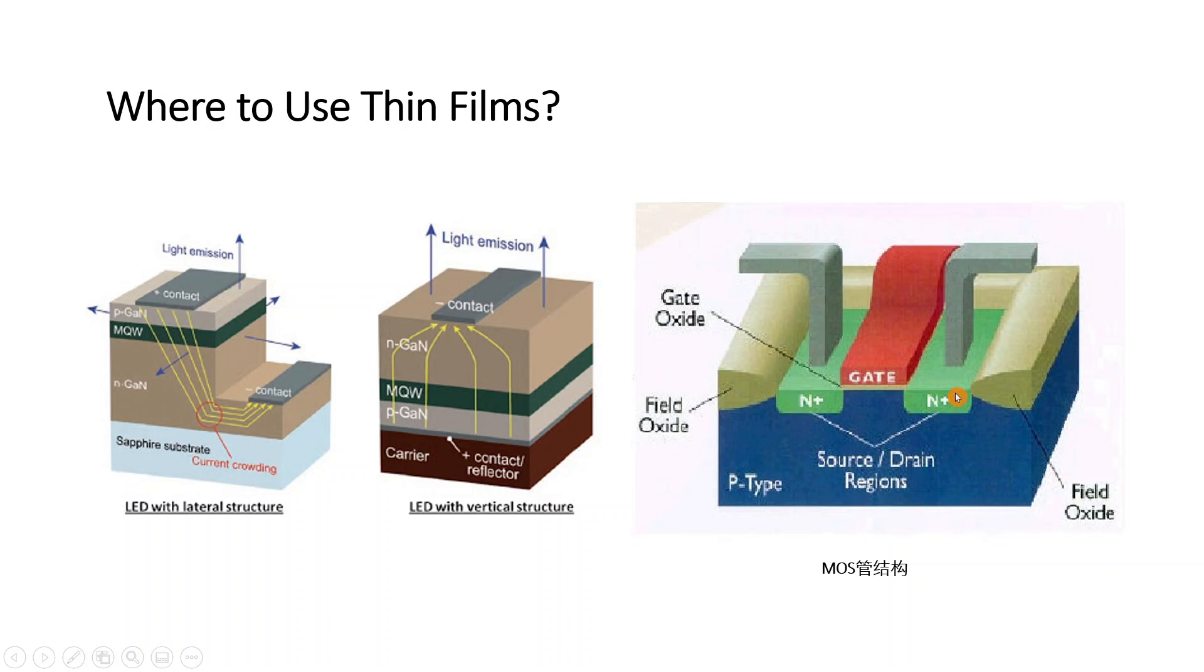So this is structure, how it looks like, this is single, this is the MOS transistor. And so basically MOS stands for the metal oxide and semiconductor.